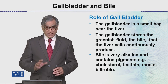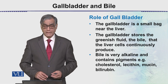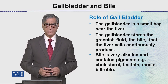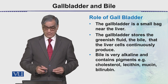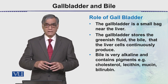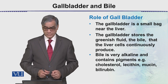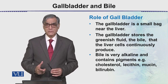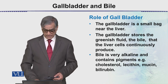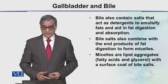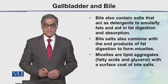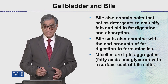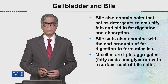Bile is very alkaline and contains pigments, which is why it is green in color. It contains cholesterol, lecithin, mucin, and bilirubin — all produced by the liver. Bile also contains salts that act as detergents to emulsify fats.